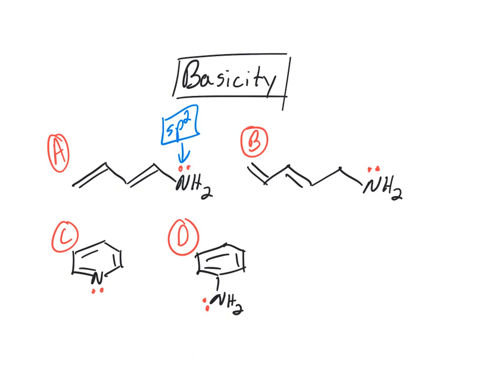Lone pair in a p orbital. Let's go to B. What hybridization state is that nitrogen? It's sp3. Notice now, there's a break. There's an sp3 hybridized carbon in between. This lone pair is not next to a pi bond, so it can't do resonance anymore.